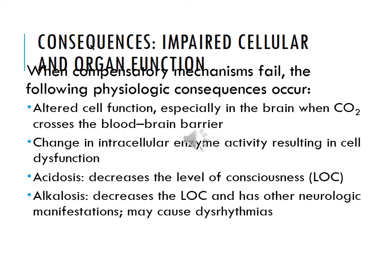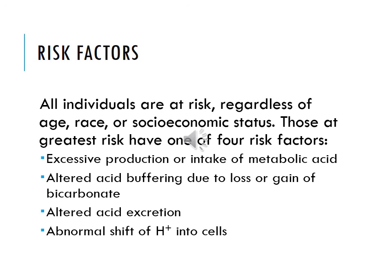When compensatory mechanisms fail, you'll have altered cell function, especially in the brain when CO2 crosses the blood-brain barrier. You could have a change in extracellular enzyme activity, which causes cell dysfunction. Acidosis causes a decreased level of consciousness. Alkalosis also decreases the level of consciousness, has other neurological symptoms, and can cause dysrhythmias. Risk factors include excessive production or intake of metabolic acid, altered acid buffering due to loss or gain of bicarbonate, altered acid excretion, or an abnormal shift of hydrogen into the cells.